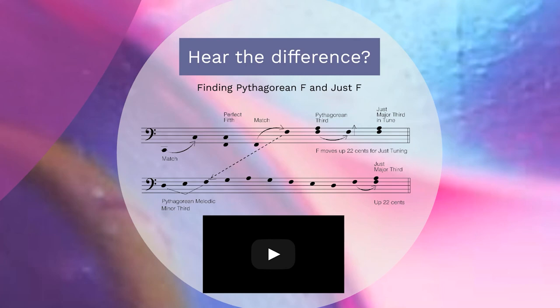So you can hear that a 22-cent glissando is quite drastic and it covers a good distance on the fingerboard. But this is how we jump from one system to the next — by use of these two different kinds of commas.